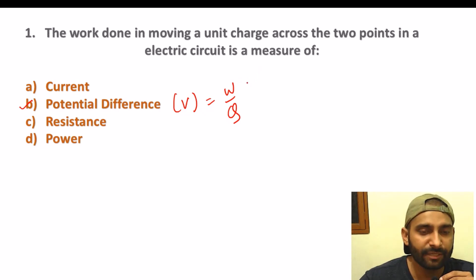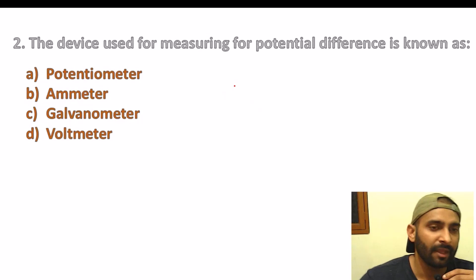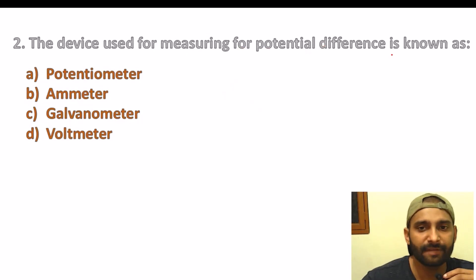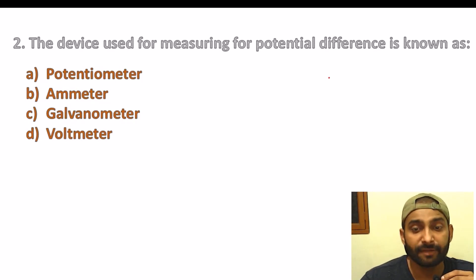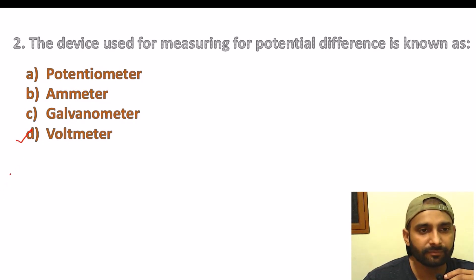Many times students are asked about its unit. Work is measured in Joules and charge is measured in Coulombs, so the unit will be Joule per Coulomb. The device used for measuring potential difference is known as a voltmeter.